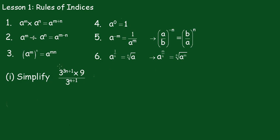Now, we'll just do this little one. This becomes 3 to the 3n plus 1 times 3 to the power 2 divided by 3 to the n plus 1.